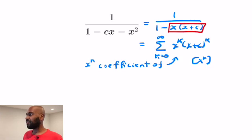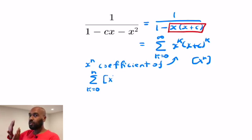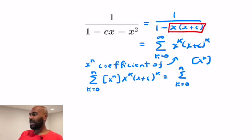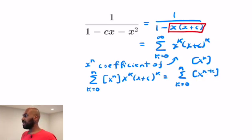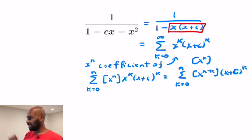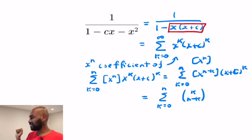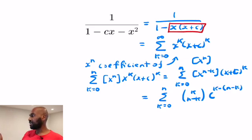We'll use the notation bracket x to the n for the coefficient of x to the n. If you look at this expression in the series, when k is larger than n, we have x to the k times x plus c to some power, so all of those terms will have powers of x larger than n. We only need to extract the x to the n-th coefficient from the first n terms in this series. The x to the n-th coefficient of x to the k times x plus c to the k is the x to the n minus k-th coefficient in x plus c all raised to the k.